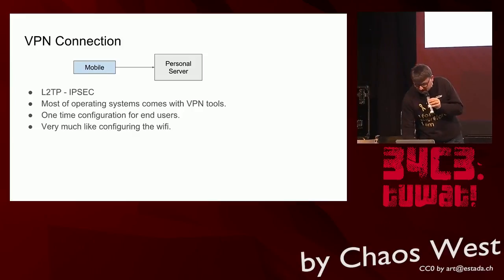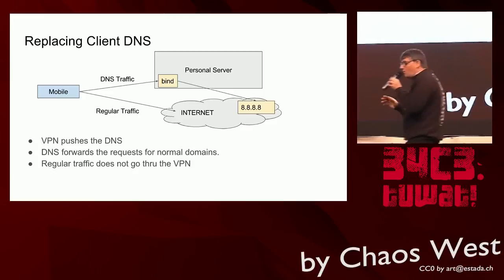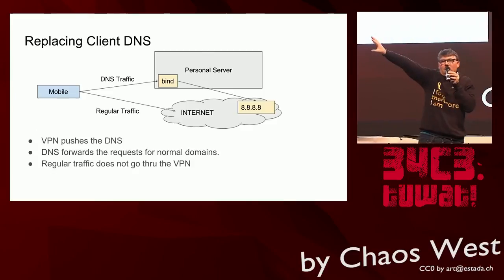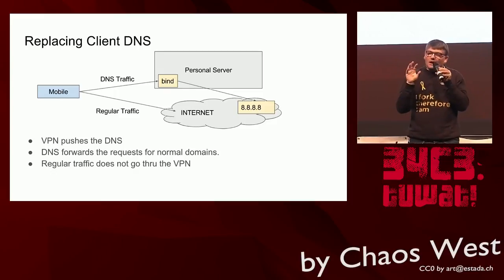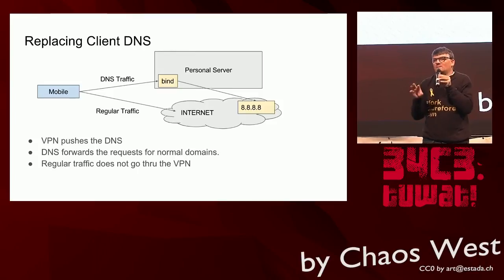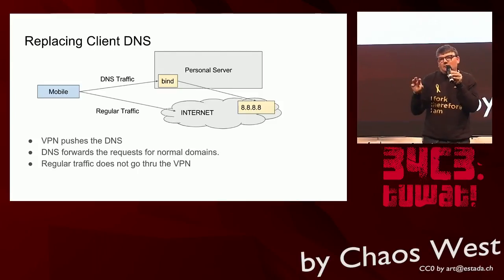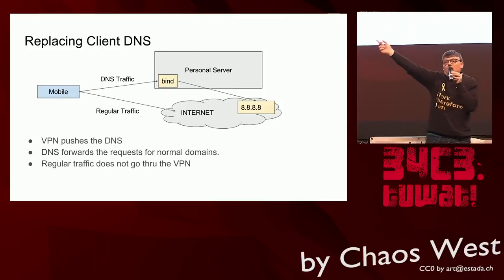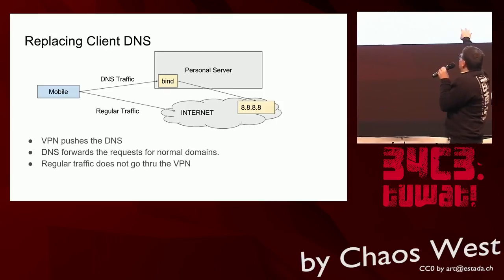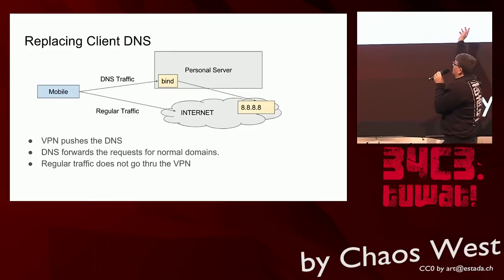Once the client is connected, the VPN is set up so that we don't send all the traffic through the VPN as a normal VPN would. What we do is let all traffic go the same way, but we push the DNS configuration to the client — this is a standard option when you configure a VPN connection. We create in our personal server a bind or DNS resolver software.